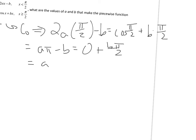A pi minus b, the cosine of pi over 2 is equal to 0 plus b pi over 2. So I get a equals b plus b pi over 2, all of that divided by pi.